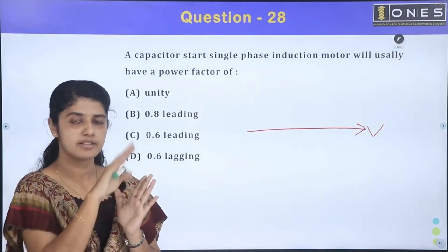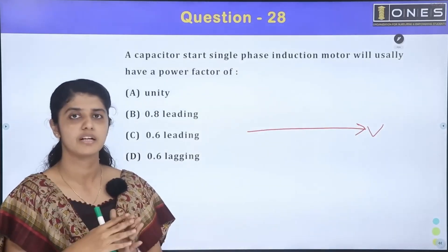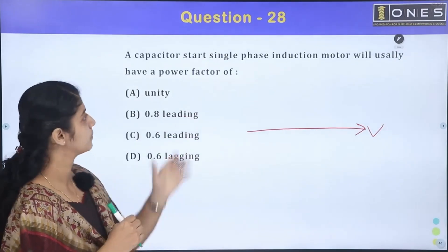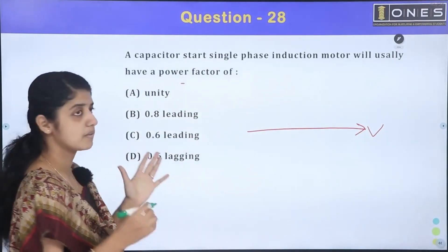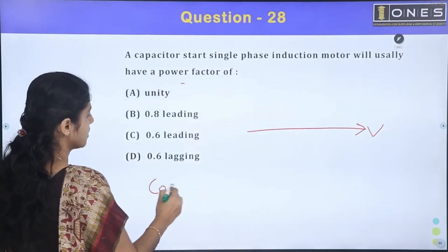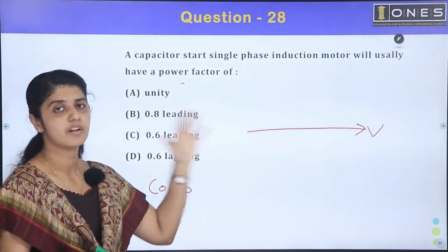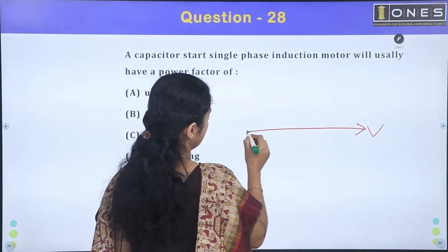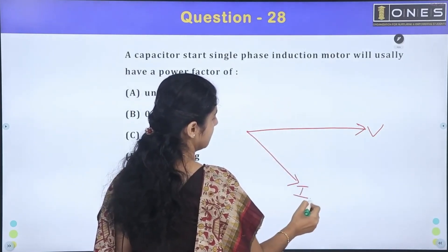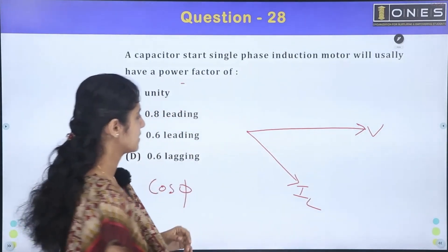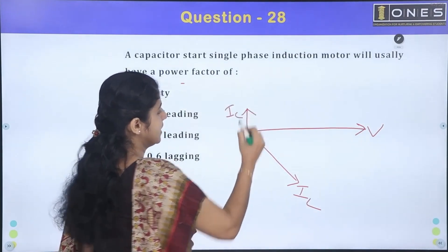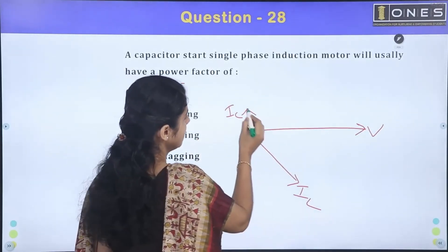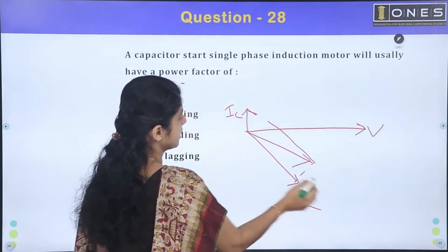The angle between voltage and current is the phase angle. This is used to find the power factor, which is cos phi. The voltage is the reference for the main winding. The current IL is lagging. The capacitor current IC is the leading component, leading by 90 degrees. The resultant current is the sum of these two currents.